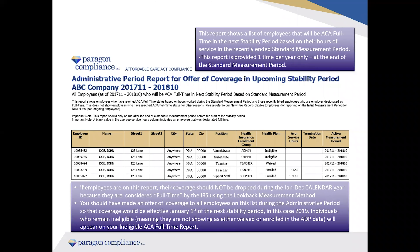Here is an example of our administrative period report. This report provides each employee that has worked over 130 average hours per month during the standard measurement period, and also includes any full-time employer-designated employees. This is provided once per year during the completion of your standard measurement period and gives you a list of employees that should have coverage maintained for the following stability period — in this case, January through December. Keep in mind all of these employees will go through their administrative period, November 1st through December 31st, giving you a 90-day window to ensure these individuals are offered coverage in time for the January 1st start of their stability period.